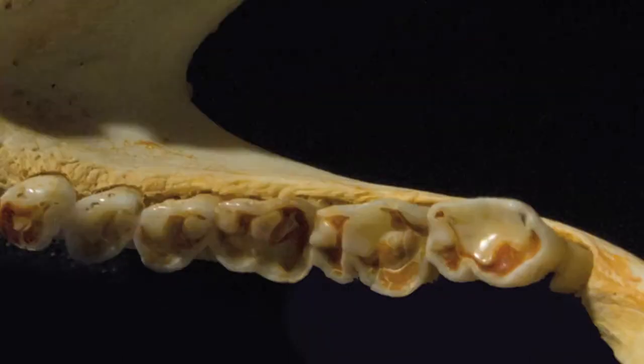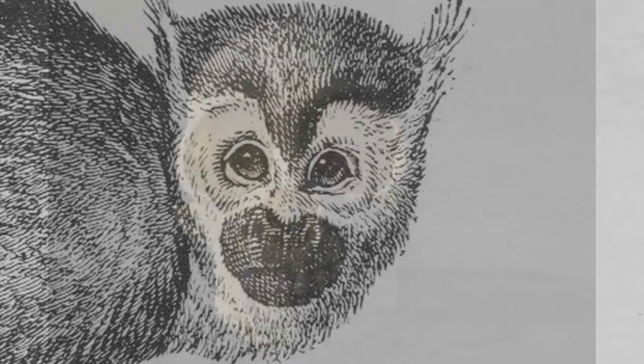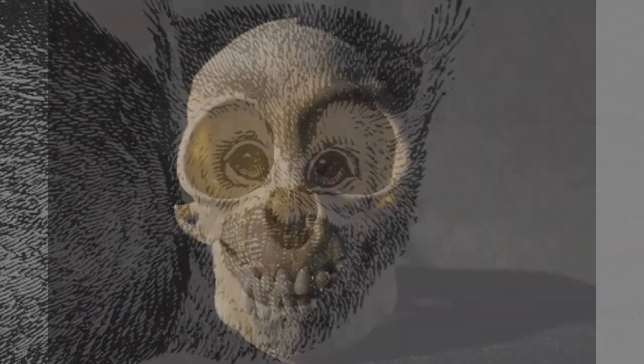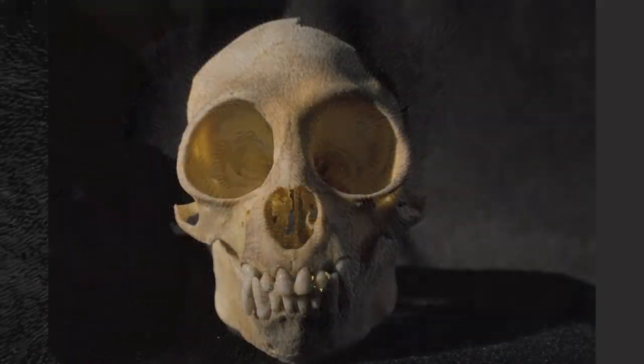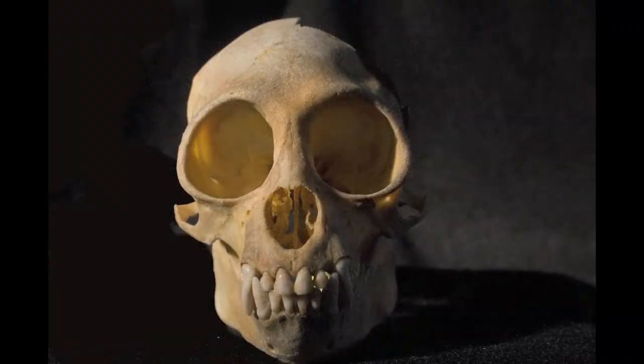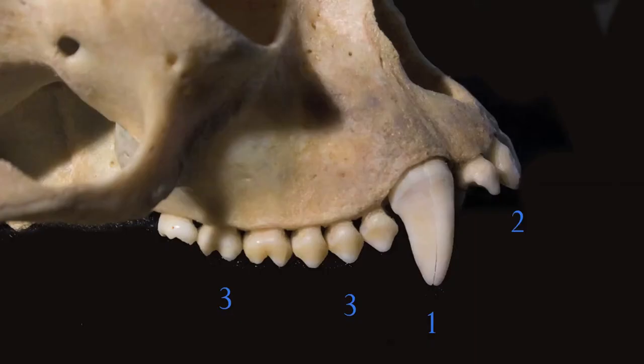Here you can see the Y5 molars. Now let's look at the spider monkey skull. Note the larger canines. Here you can see it has the common platyrrhine dentition.